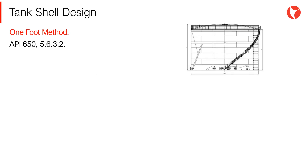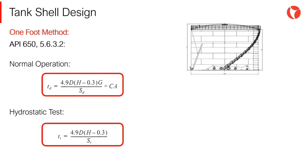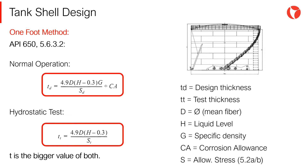The tank shell thickness calculation, according to the 1-foot method, compares two load combinations: normal operation loads and hydrostatic test loads. The bigger value of these two will be adopted for the tank shell thickness. This thickness is a function of the mean diameter of the tank, the liquid level, the specific density of the fluid, the corrosion allowance if required, and the allowable stress.